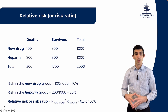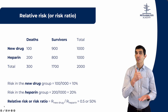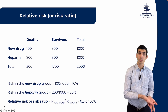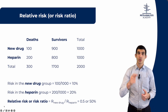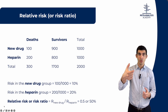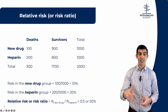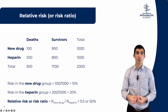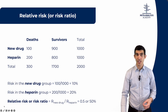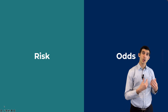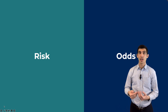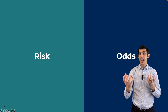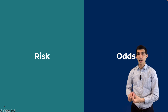The risk ratio, or relative risk, is simply the risk in the new drug group divided by the risk in the heparin group. It's a ratio: you divide 10% by 20%, so you get a risk ratio of 0.5, or 50%. But you could also describe this association between drug therapy and mortality using odds.